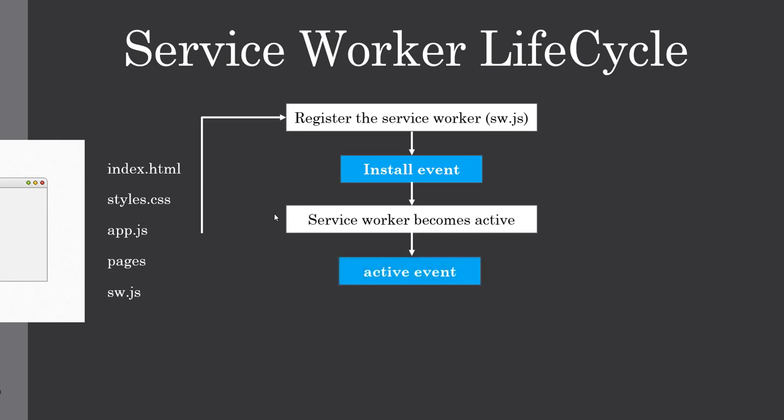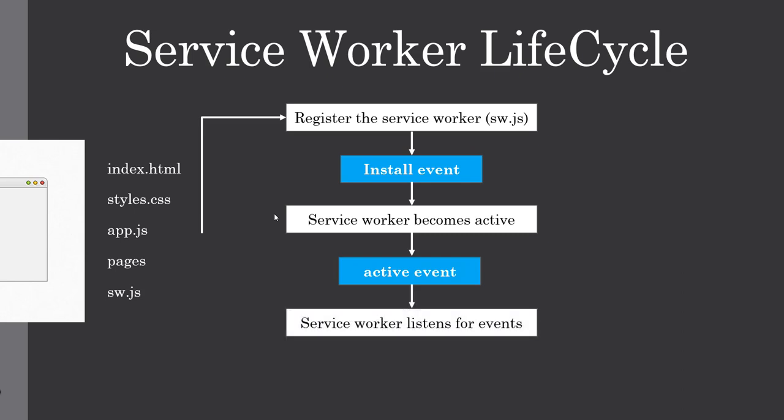It will try to invoke the active event, and again, we can also add callback functions to this. If the service worker becomes active, that means the service worker can now listen for events or any activity within the lifecycle of our PWA project — the progressive web app that we are trying to implement.